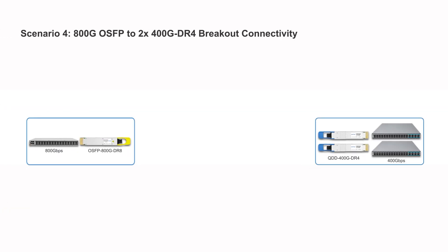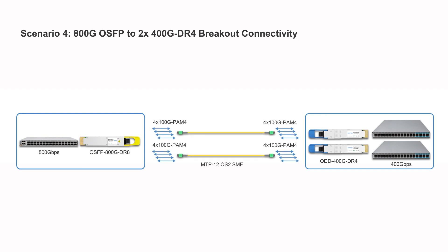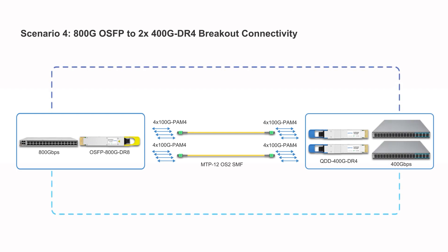Additionally, you can also use two MTP12 OS2 patch cables to connect two QDD 400G DR4 modules to one OSFP 800G DR8 module to connect the switches, achieving a seamless transition from low-speed to high-speed rates.